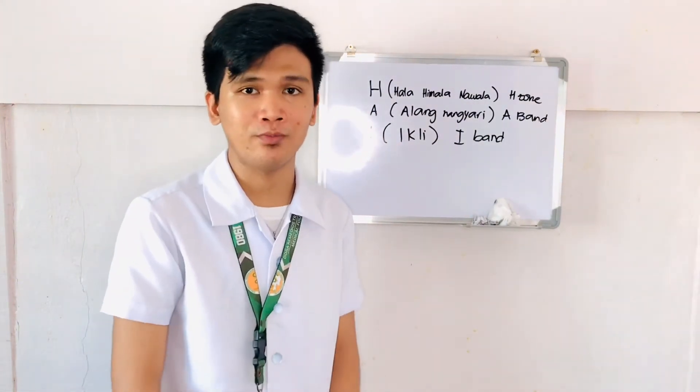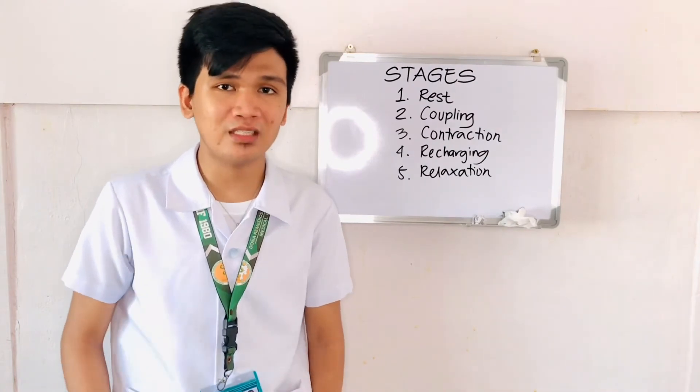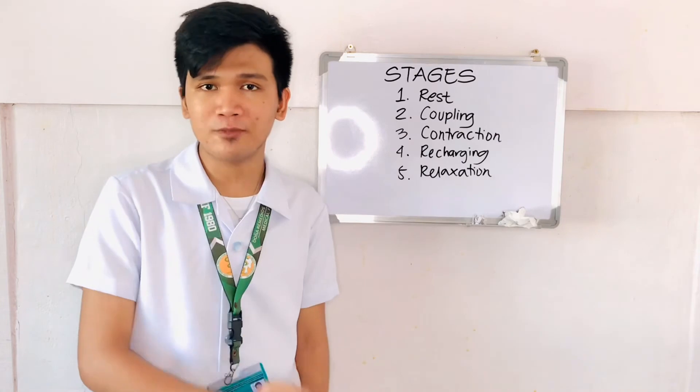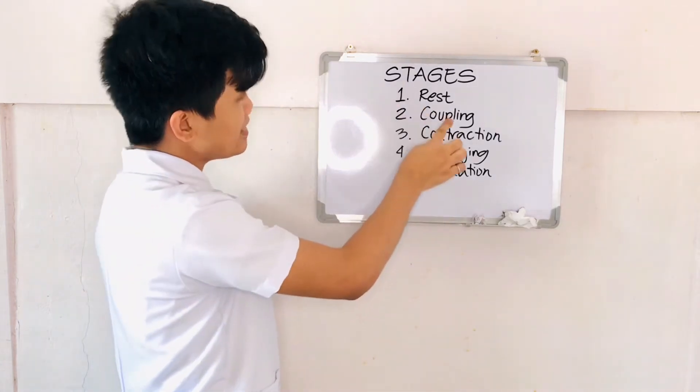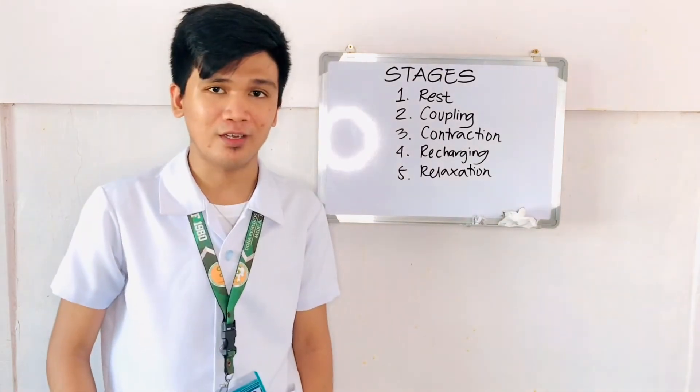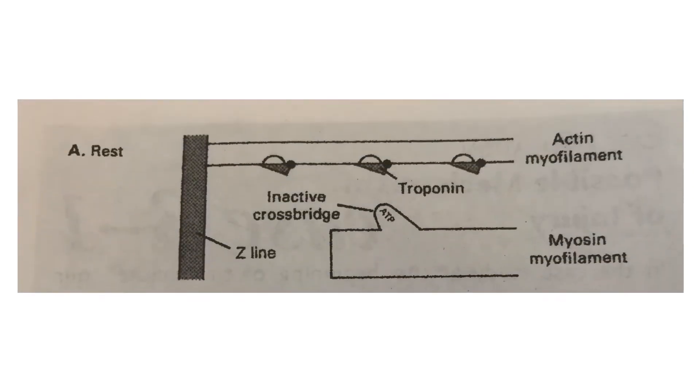And we have different stages for sliding filament interaction, also known as cross-bridge interaction. We have rest, coupling, contraction, recharging, and relaxation. Now, the first stage is rest. As you can observe, there are no changes yet. And that is because the troponin covers the active sites on the actin myofilament and the ATP is still attached to the head of the myosin myofilament.